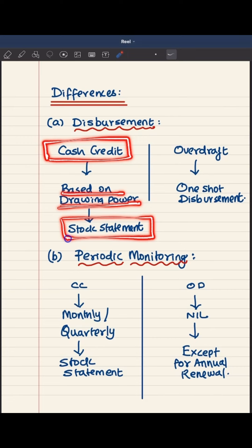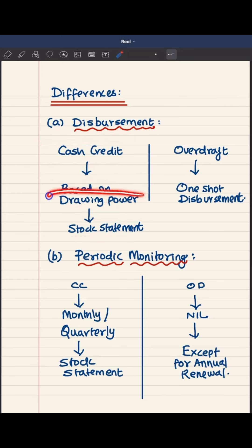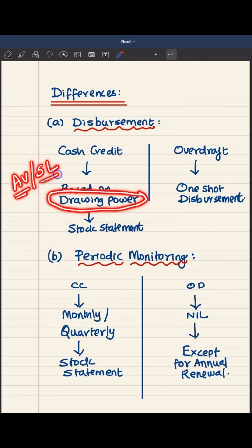Disbursement in cash credit is very stringent and is absolutely based on drawing power, which can be altogether different from the sanction limit. Disbursement will be the amount derived as per drawing power, arrived by comparing the advance value with the sanction limit. If the advance value is less than the sanction limit, then only the advance value will be considered as drawing power.